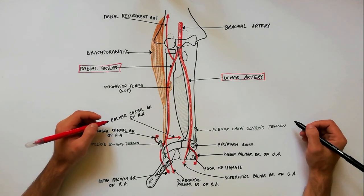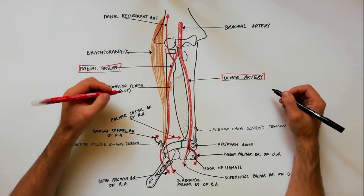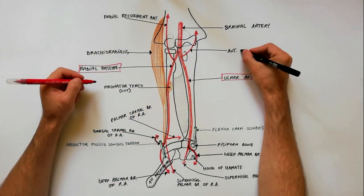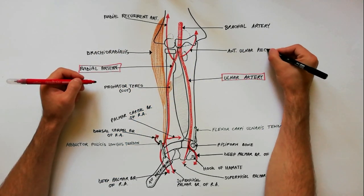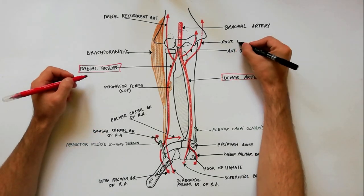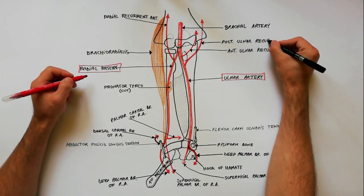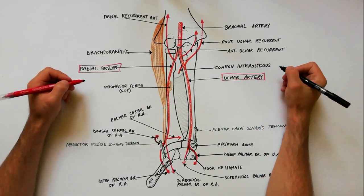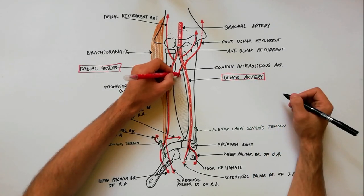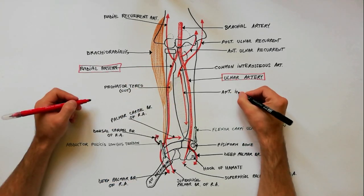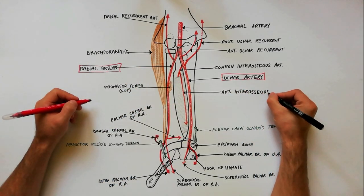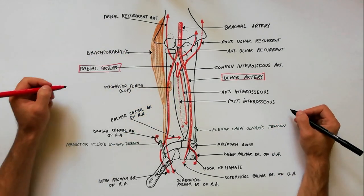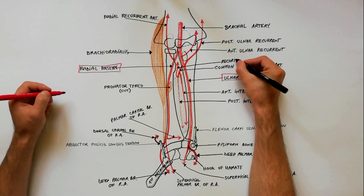Apart from these terminal branches, from the ulnar artery are arising the following branches. Proximally are arising the anterior ulnar recurrent artery, the posterior ulnar recurrent artery, and the common interosseous artery. The common interosseous artery divides into an anterior interosseous artery and a posterior interosseous artery. The latter gives off the recurrent interosseous artery.